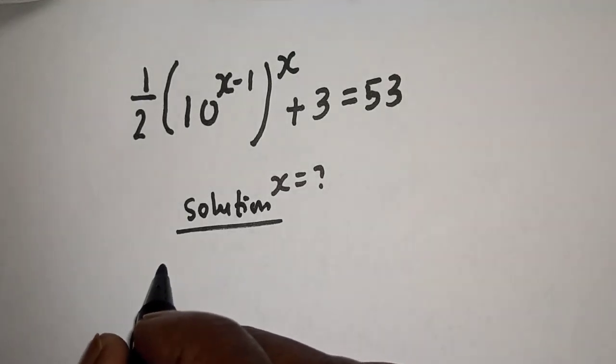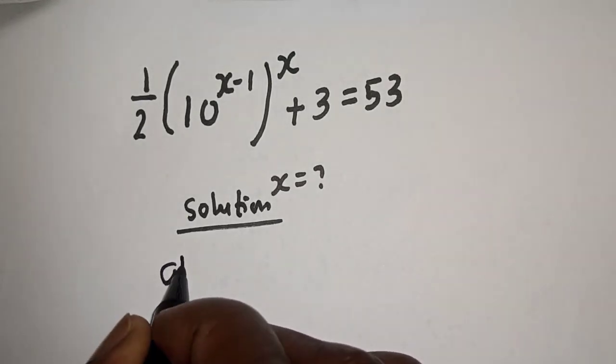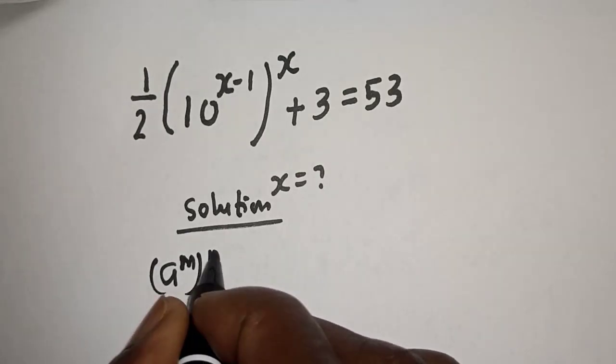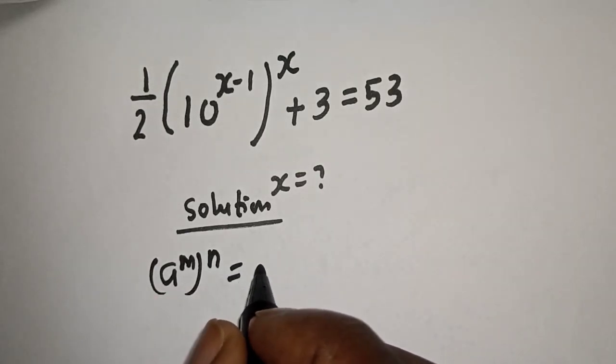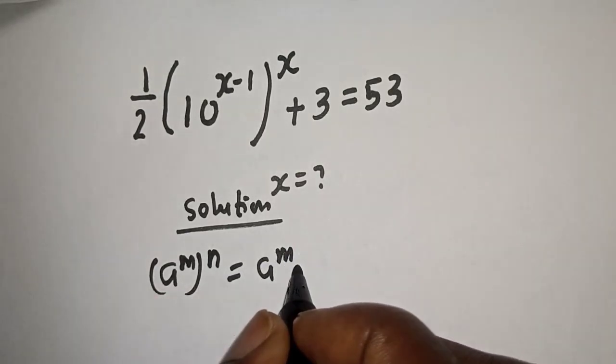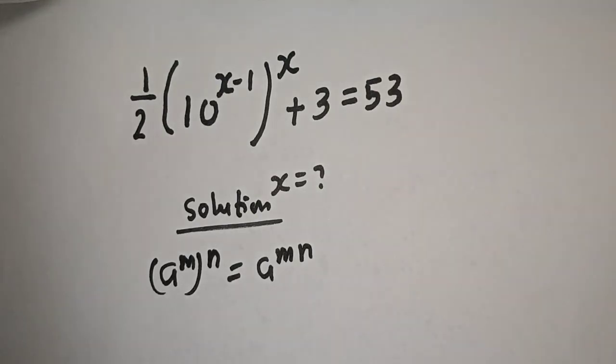Take note of this exponential rule: if you have a raised to the power m, raised to the power n, that is equal to a raised to the power m·n.